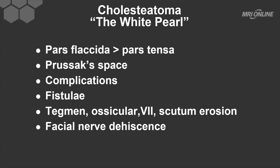Cholesteatomas are seen otoscopically as a white pearl — a pearly white soft tissue that is seen deep to the tympanic membrane. This is going to be distinguished from the red retrotympanic lesion, which includes vascular lesions and glomus tumors, which we'll talk about in a moment.